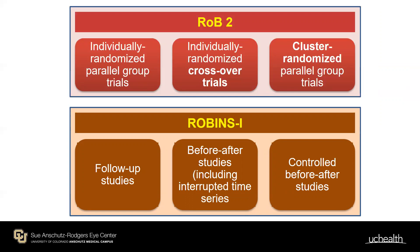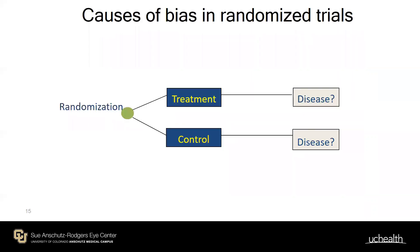ROBINS-I is for observational studies — cohort studies, before-after studies, and controlled before-after studies. A common criticism of Cochrane was that it only looked at RCTs; now Cochrane welcomes non-randomized studies as long as you know how to assess risk of bias and your interpretation of the totality of evidence accounts for the design limitations of observational studies.